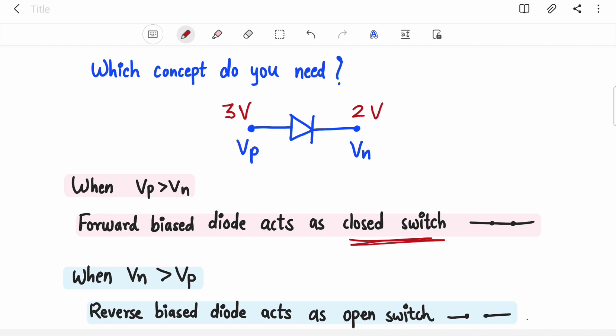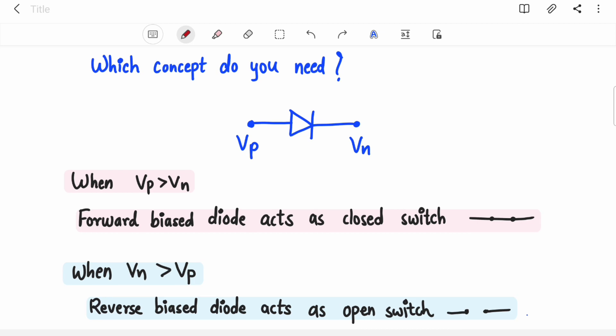Then if voltage at negative terminal is greater than voltage at positive terminal, then it will act as open switch. Now you are clear with what is forward biased and what is reverse biased.